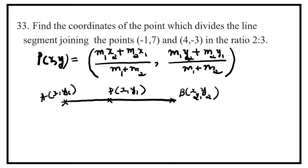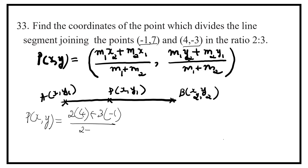Let us now substitute the values: x1, y1; x2, y2; m1 is to m2. So P(x, y) is equal to — for the x-coordinate — m1 is 2 into x2 which is 4, plus m2 which is 3 into x1 which is minus 1, upon 2 plus 3.